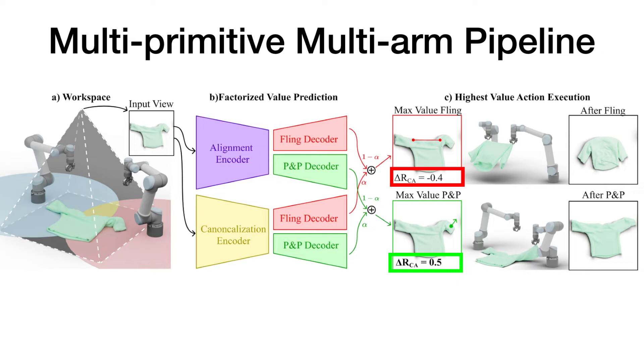In the example that is shown here, the cloth is almost at the goal, so a fine-grained pick and place is better than a fling, so the pick and place is executed.